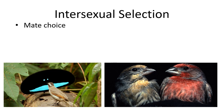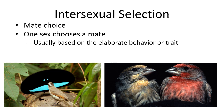Intersexual selection — 'inter' meaning between — is where one mate chooses another, generally the female choosing the male, though not always. It's usually based on an elaborate behavior or trait. House finches are an example: males that are more brightly colored, with a dense rich redness or orangeness in their feathers, are the ones that mate. Birds of paradise have elaborate dances and colorful feathers, and the female will fly by and choose to mate with a particular male.